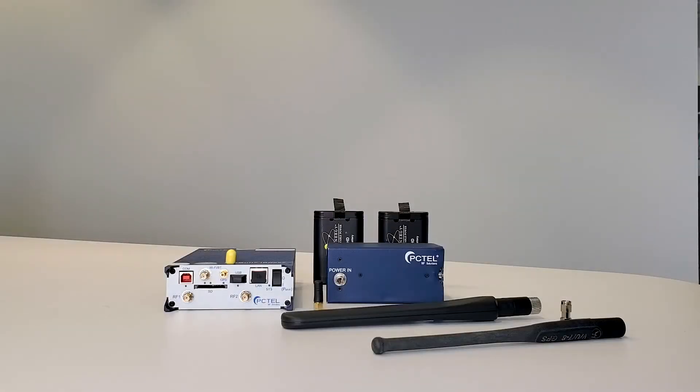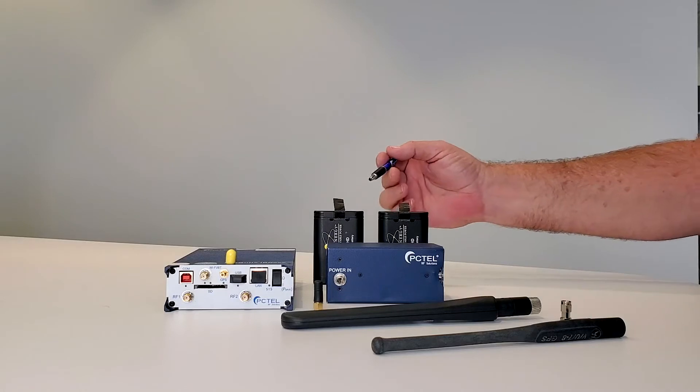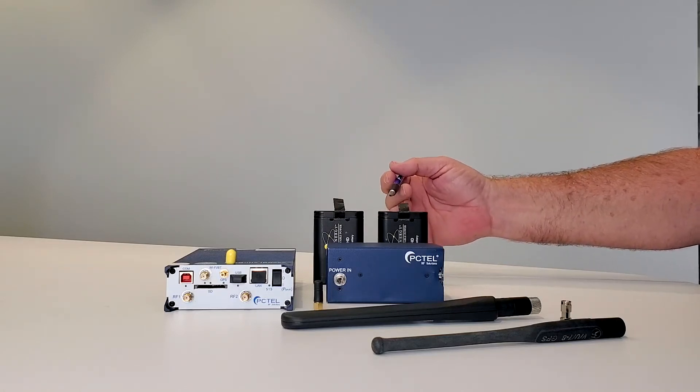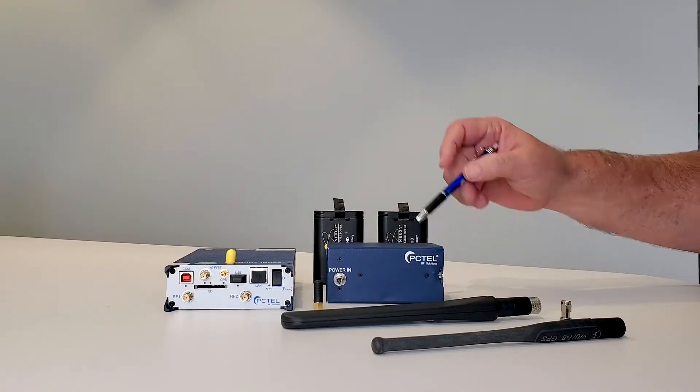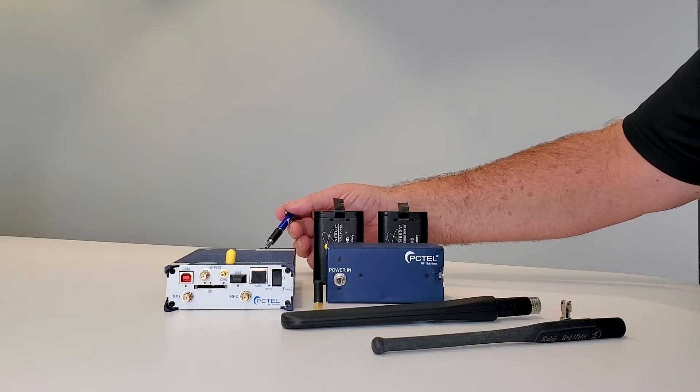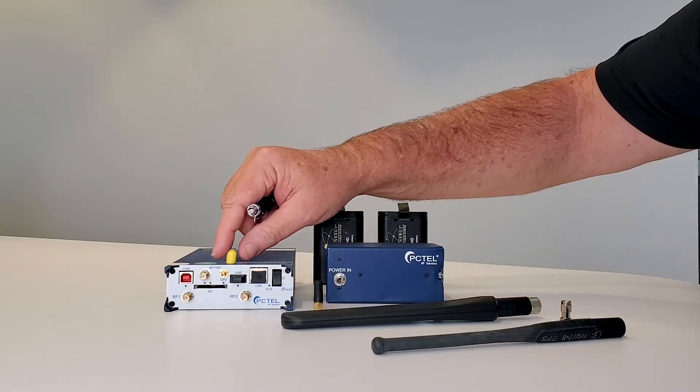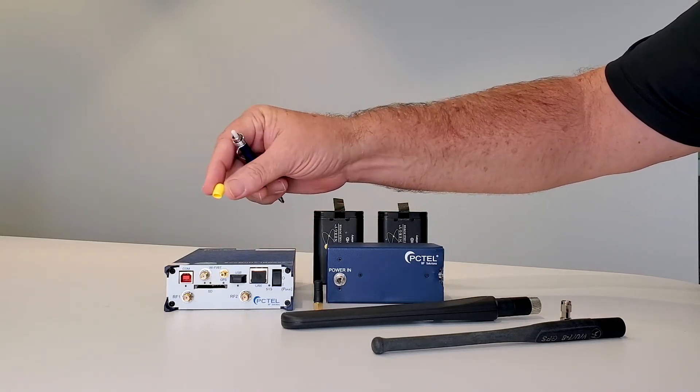When using your IB Flex scanner for in-building use, you're going to have batteries. These two batteries we're going to place into the battery box, attach it to our scanner, and then we're going to place our antennas on the front of the scanner, which are normally covered by dust covers.